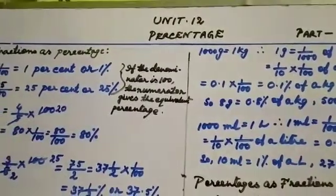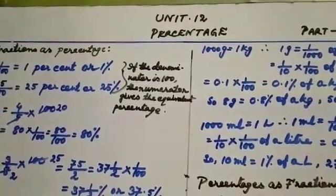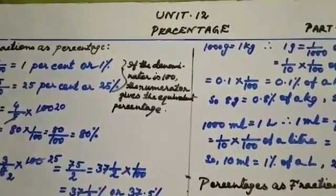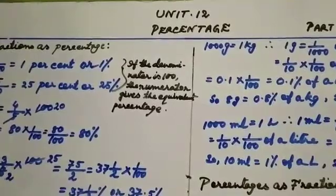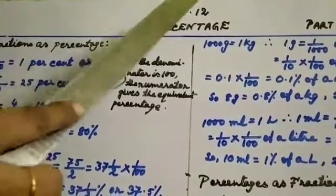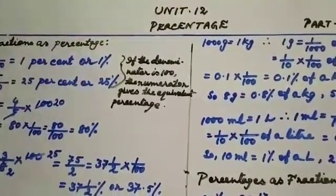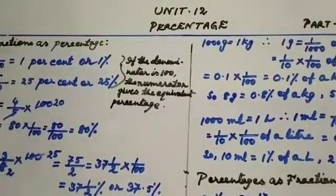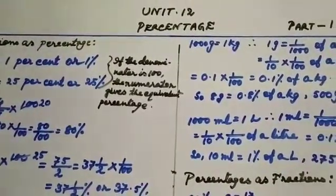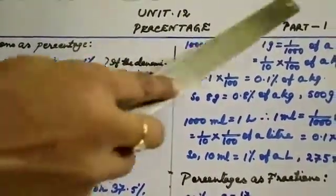Om Namah Shiva, students. Today we will learn a new unit — Unit 12: Percentage, from your Junior Maths book 5 Part 1.